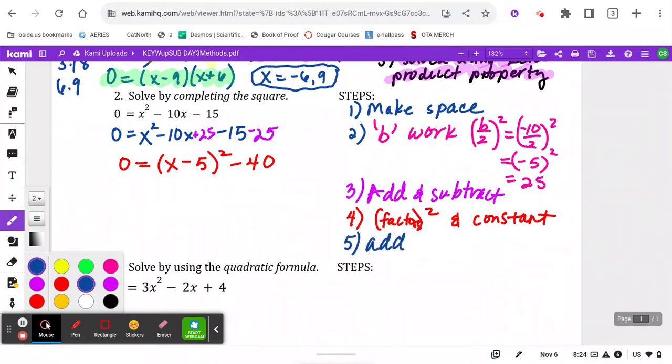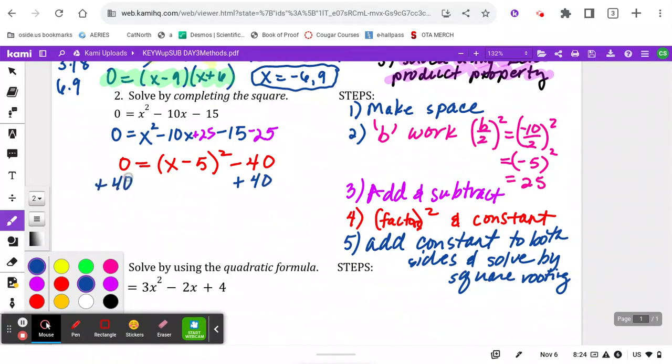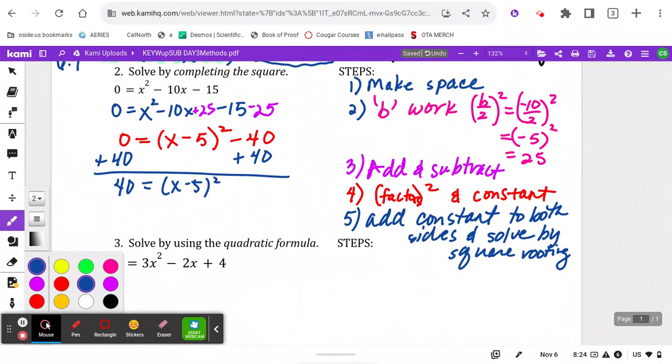We're going to now add the constant to both sides and solve by square rooting. So go ahead and try it. Plusing 40 to both sides gives me 40 equals x minus 5 squared. We're then going to square root both sides.